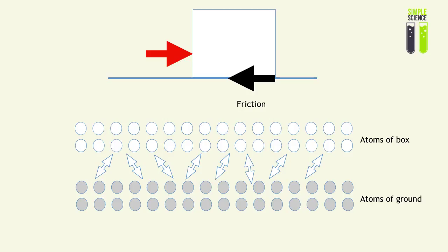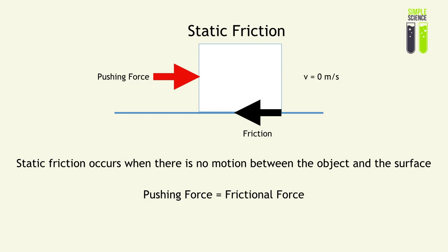Let's look at one type of friction: static friction. Static friction occurs when there is no motion between the object and the surface. However, there is a frictional force opposing the pushing force, and therefore this object cannot be set in motion. Try to push an eraser slightly on the ground and you'd realize you won't be able to move it. That is because of the static frictional force, which is equal to the pushing force, as indicated in the diagram.